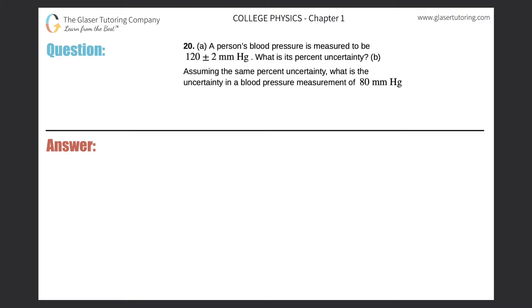Number 20, part A. A person's blood pressure is measured to be 120 plus or minus 2 millimeters of mercury. What is its percent uncertainty?